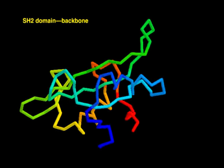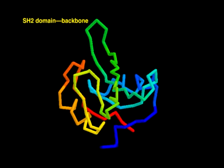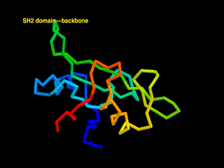The backbone view shows the path of the polypeptide chain. The chain is colored blue at its C terminus.